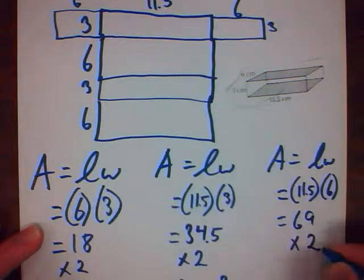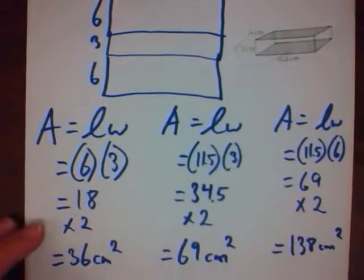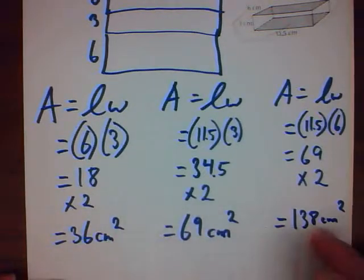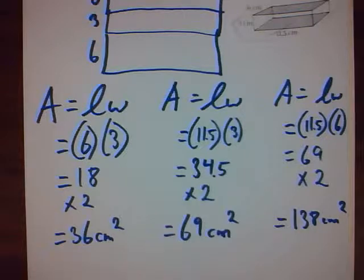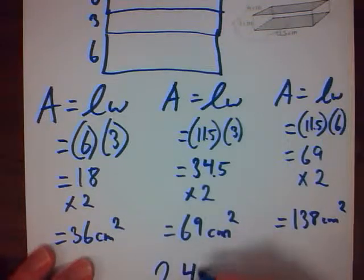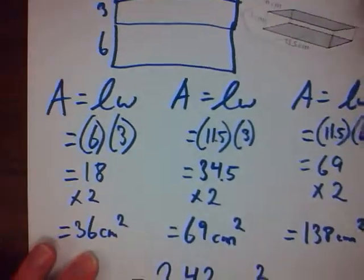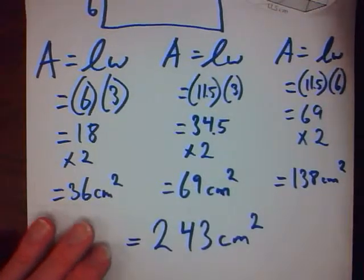And there I have to times that by 2, because there are two of them. And there I have those three numbers. Now I have to add them all up. Gives me a final total. 243 centimeters squared.